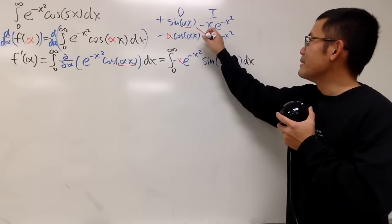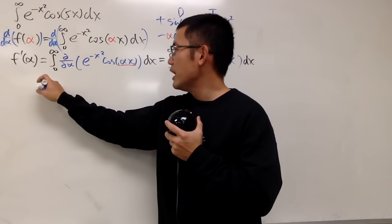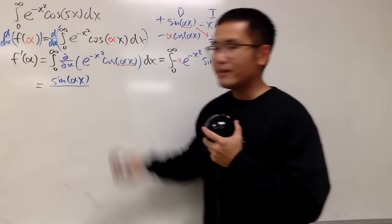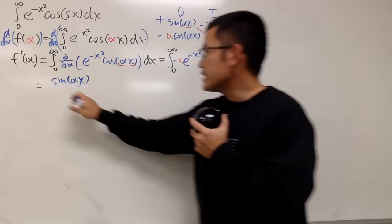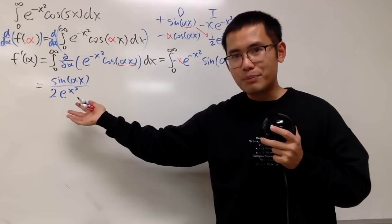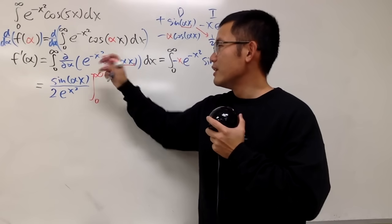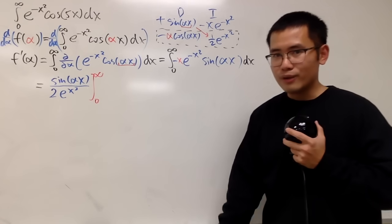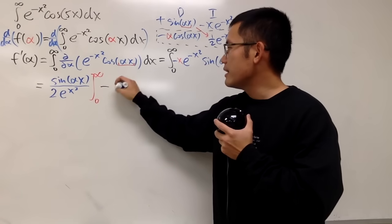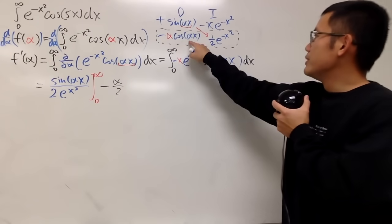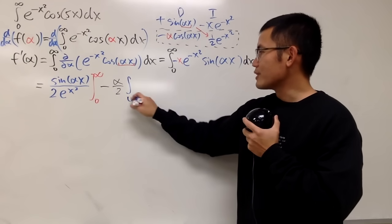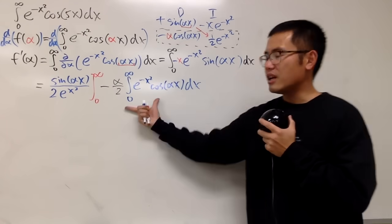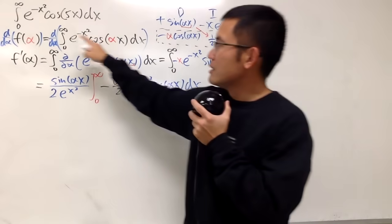Now this times that gives the first part of the answer. We have sine of alpha x over 2e to the positive x squared, evaluated from 0 to infinity. Then continuing, we multiply this row — this is still an integral — giving minus alpha over 2 as the constant in front. Inside the integral from 0 to infinity we have e to the negative x squared cosine of alpha x — and doesn't this look familiar? Yes, it does. It's our f of alpha.